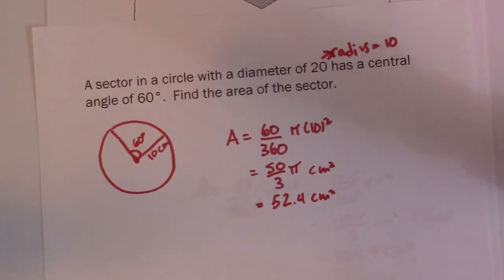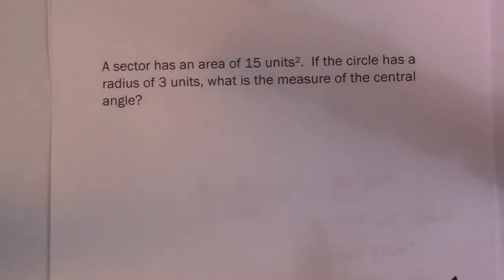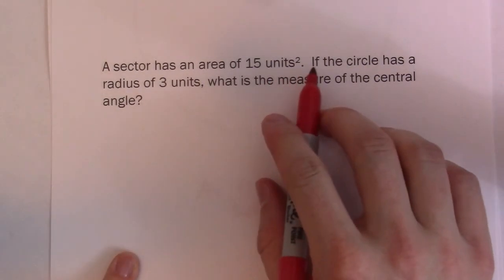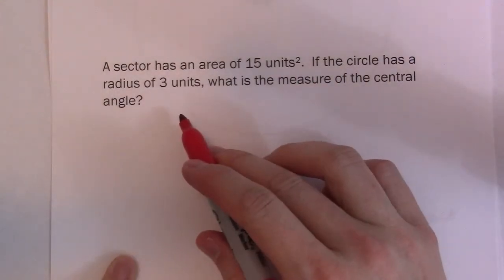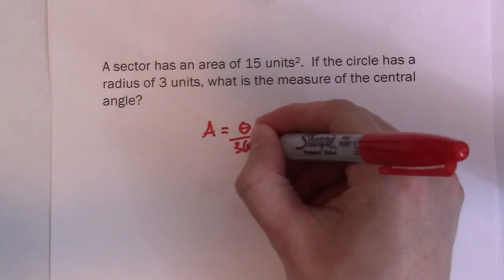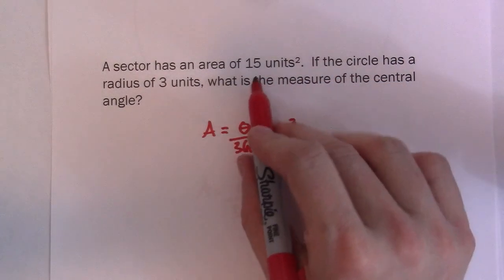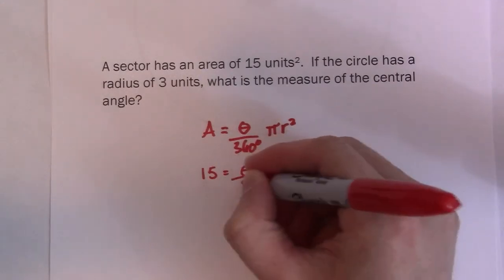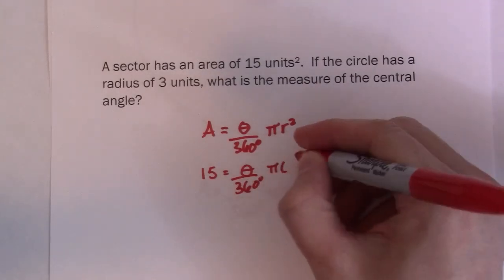I got one more here. Actually, I got two more. High five. If I look at this guy, I'm given the area in this scenario. It says the area of a sector is 15 units squared. If the circle has a radius of 3, what is the measure of the central angle? I'll write my formula out. This time we're solving for theta. It doesn't tell me in radians or degrees, so I'm just going to do it in degrees. My area is 15.